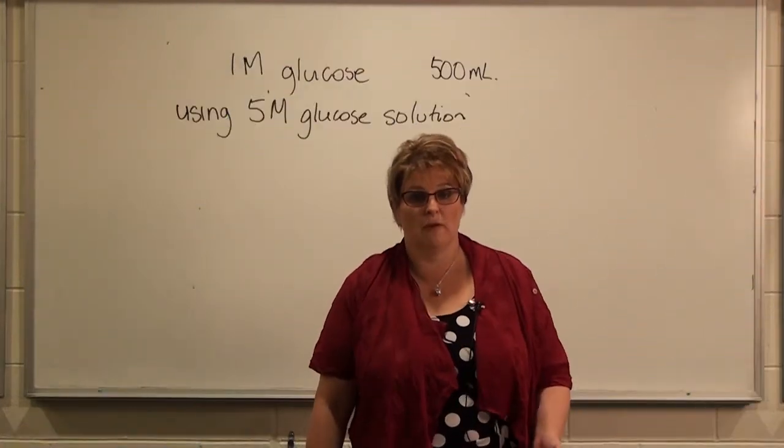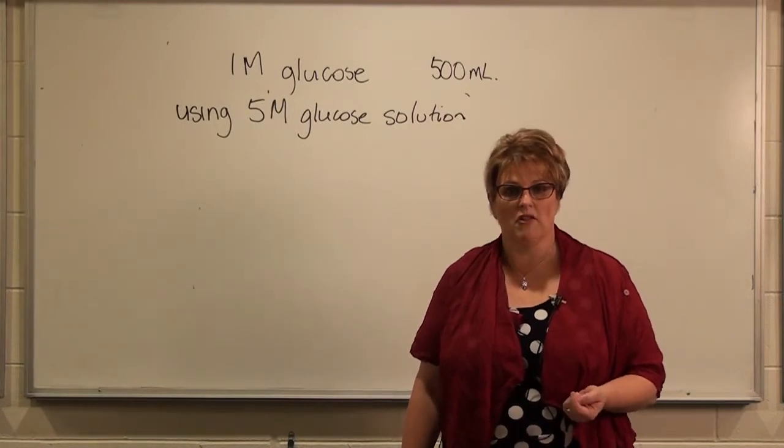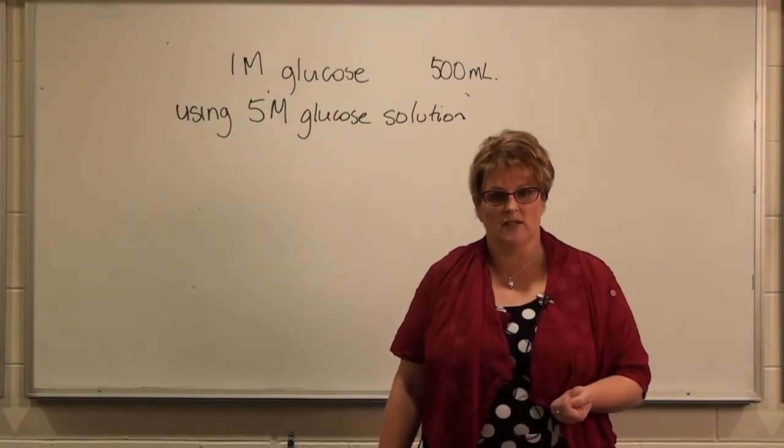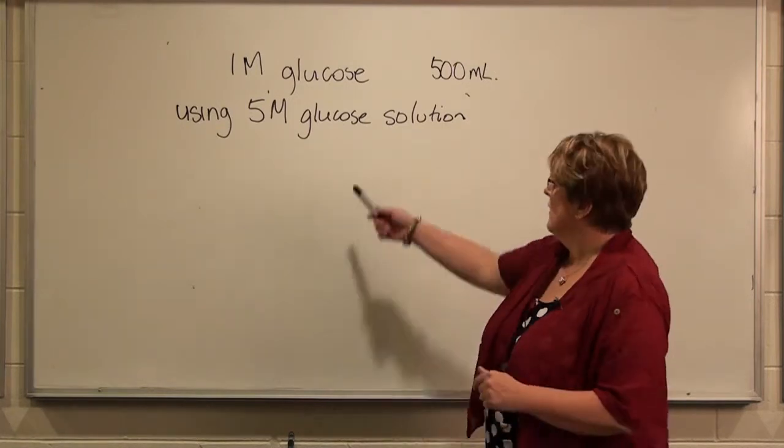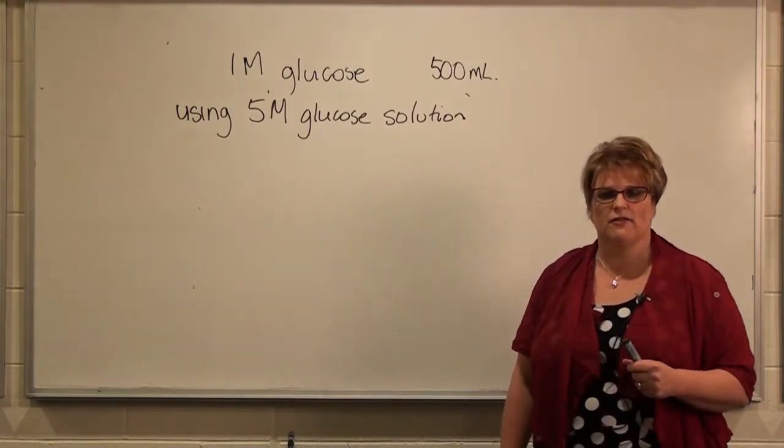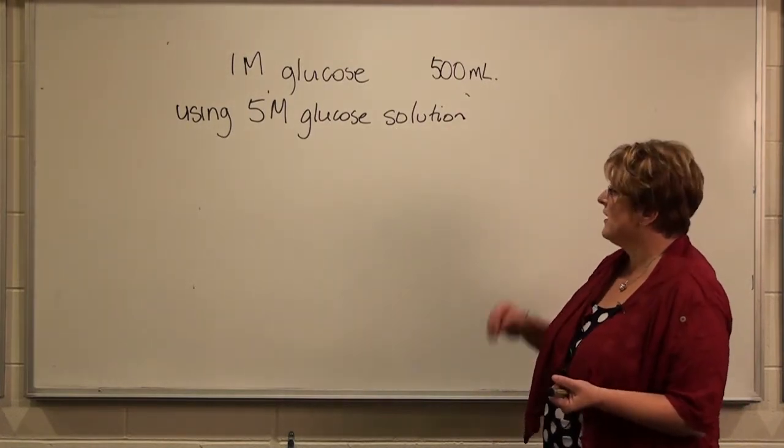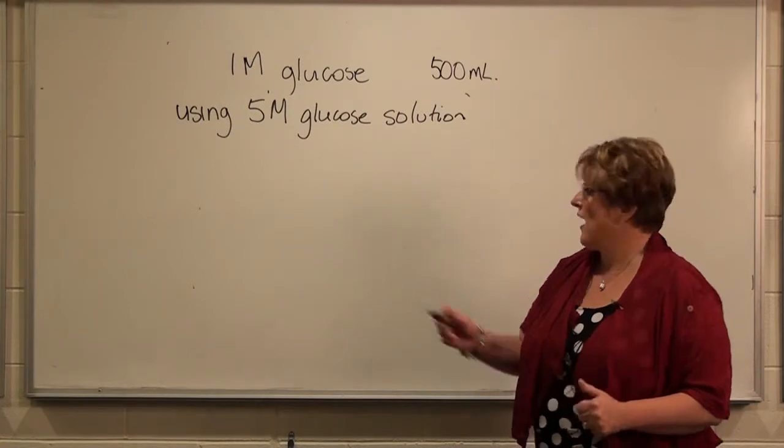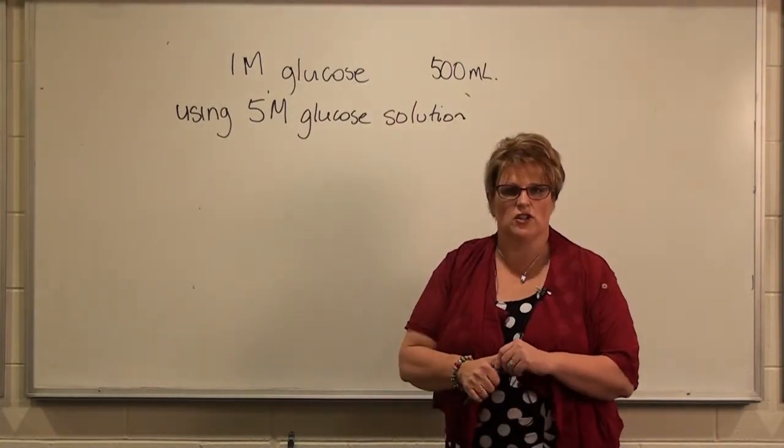As I alluded to before, another way that scientists will make up solutions in laboratory is dilution of a stock solution. So you might have on the shelf already a solution which is 5 molar in concentration of glucose. So the question then is, how do we dilute this solution down to a concentration of 1 molar?